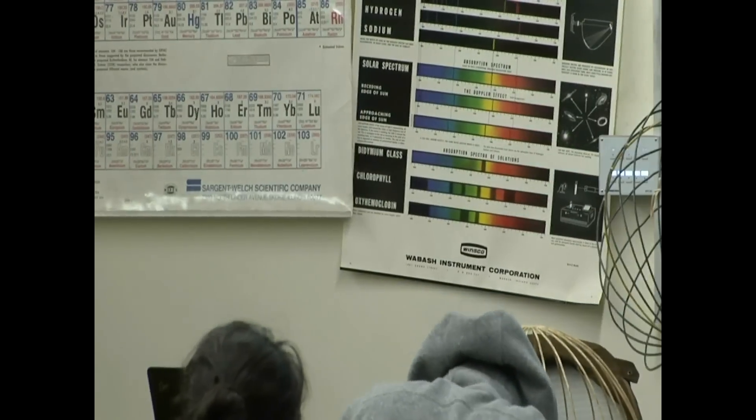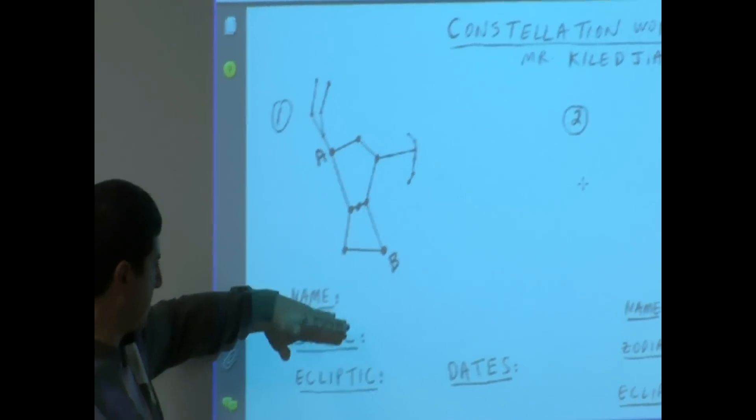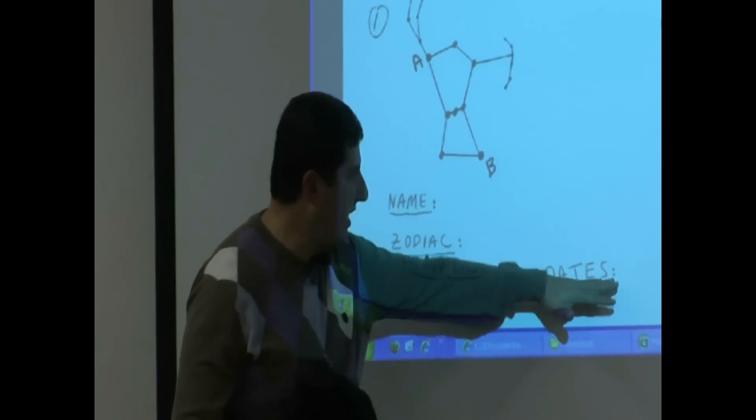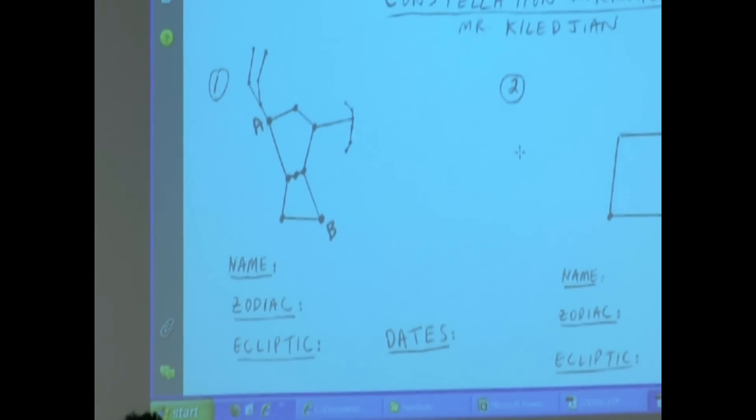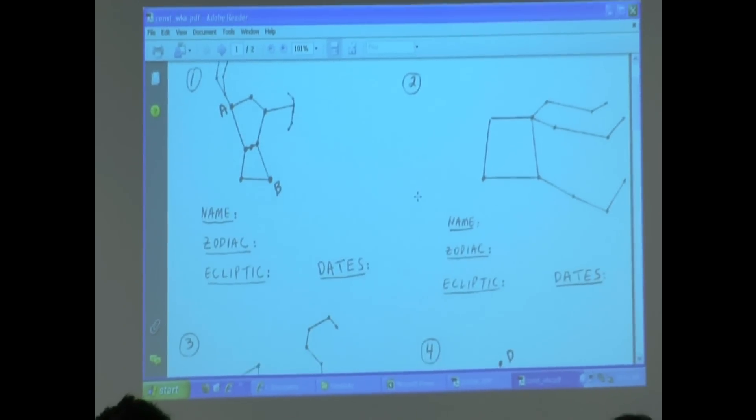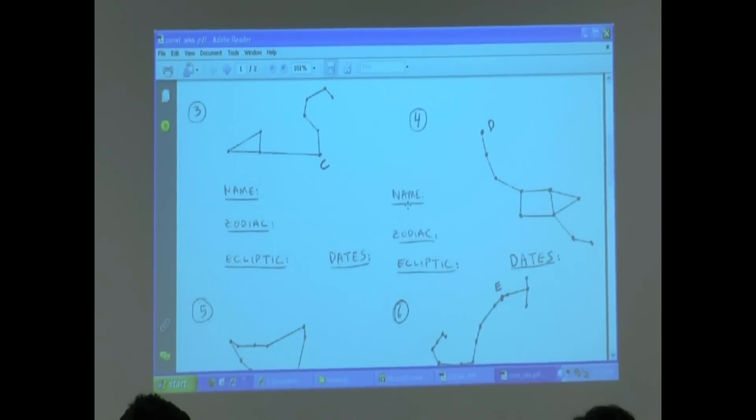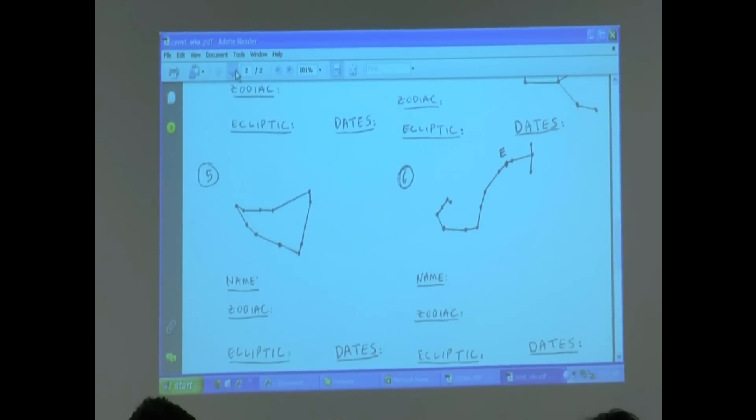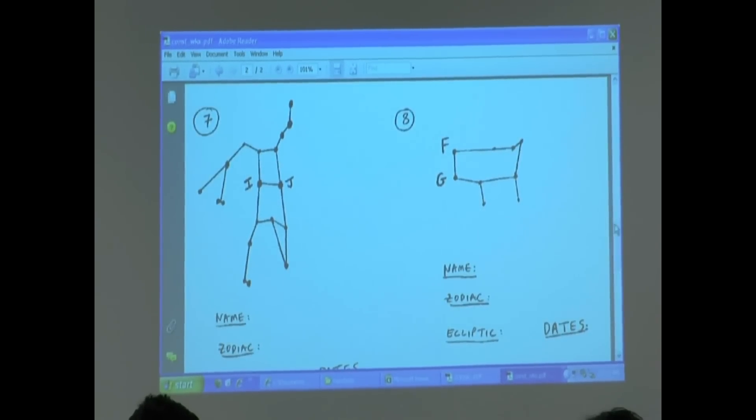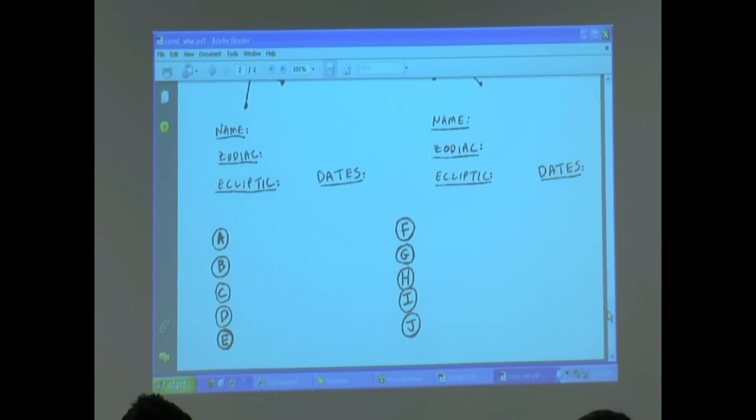Basically the constellation worksheet assignment. You are given constellations here and it says name, zodiac, ecliptic, dates. You've got ten of those constellations one, two, then you have some other ones here three, four, five, six, and then the next page some more, and then at the end you've got some letters.